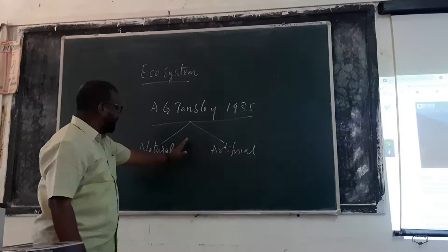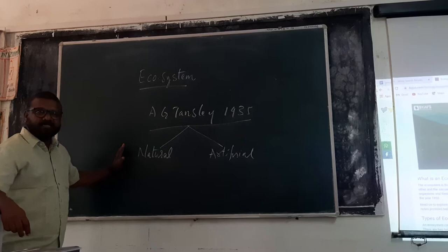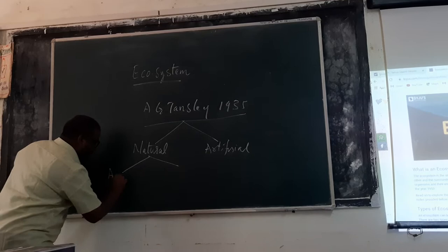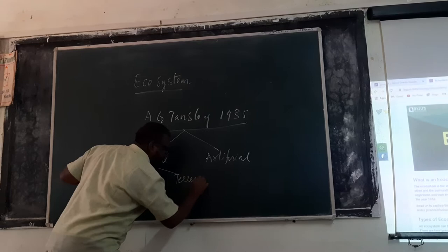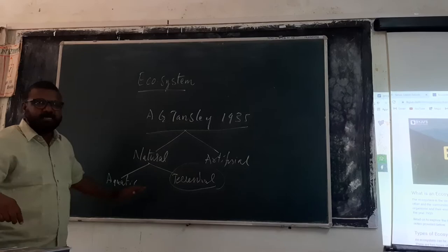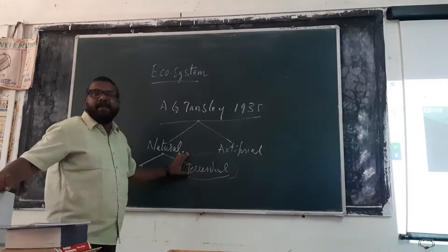Coming towards the natural ecosystem concept, the natural ecosystem has been classified majorly into two types. One is called as aquatic ecosystem and another one is called as terrestrial ecosystem. The terrestrial ecosystem in other words is called as land ecosystem. A.G. Tansley, based on its existence, classified it into majorly three types.